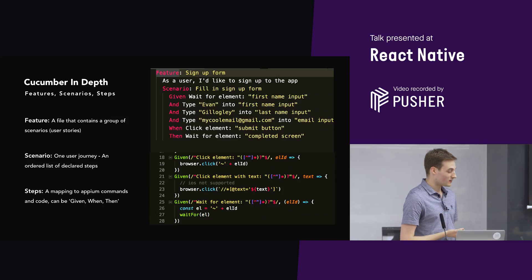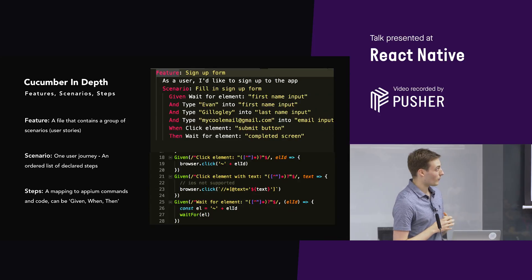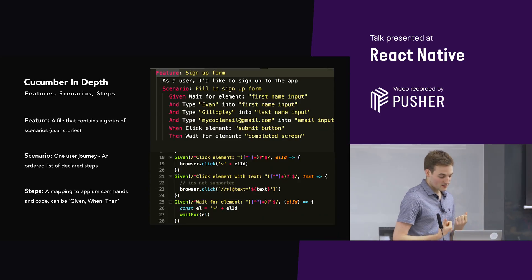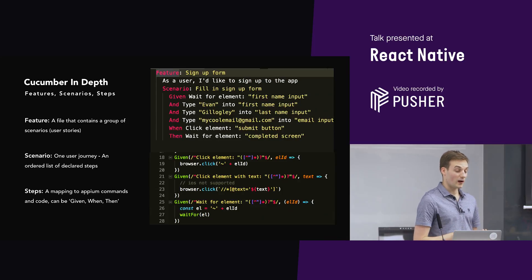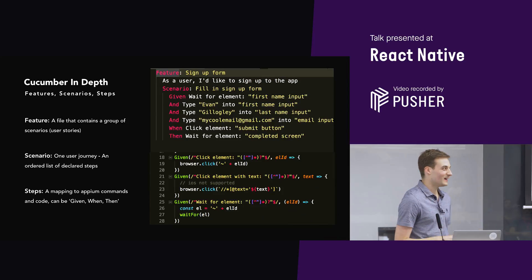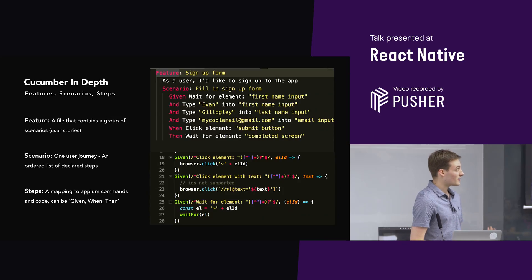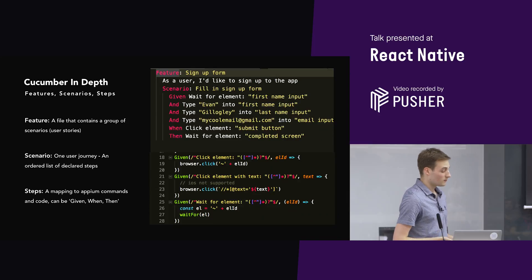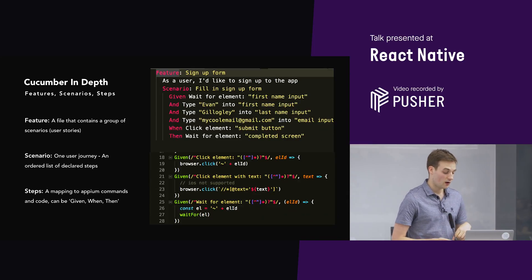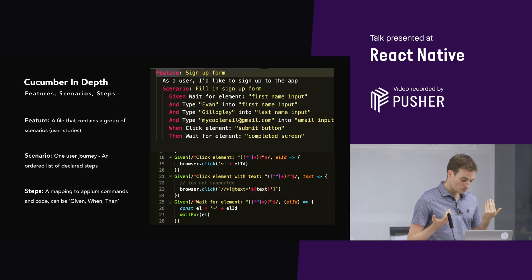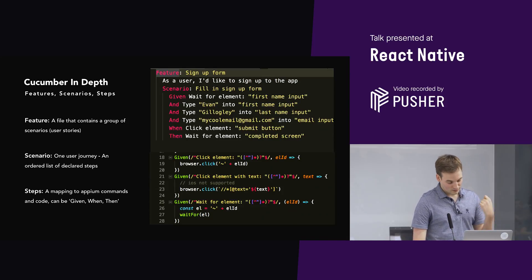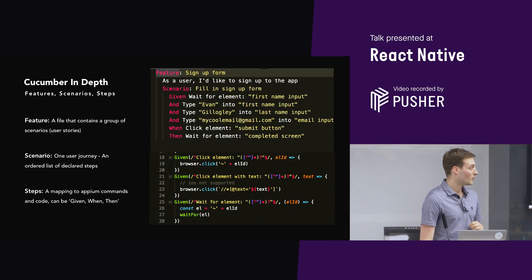So how does it work? Right here I have a signup form and I'm testing the whole flow as an integration test. I'm actually clicking the input fields, typing in them, and then pressing the submit button to sign up for our membership club. The top bit is a feature file — this is what I mean by plain English. You can read it, you can understand it. You don't have to even look at the code to see what's going on. The code below it is another file written in TypeScript that's just mapping a regex string to an Appium command.